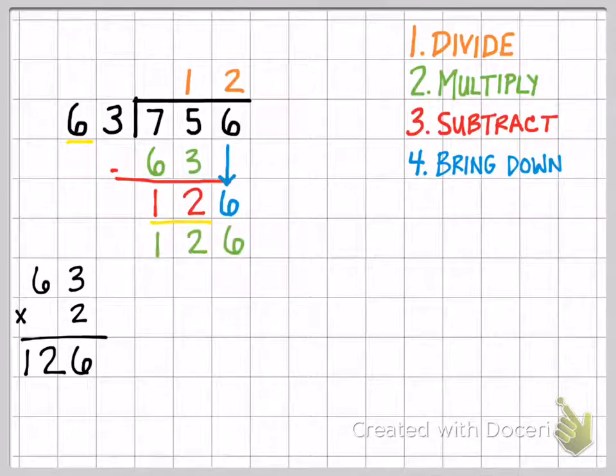I multiply that back out, and since I just did the work, then I copy the 126. I subtract again. Because I have no numbers in the dividend that don't have a digit in the quotient above it, then I know that I am done. And since I don't have anything left over, I don't have a remainder, so my answer is just 12.